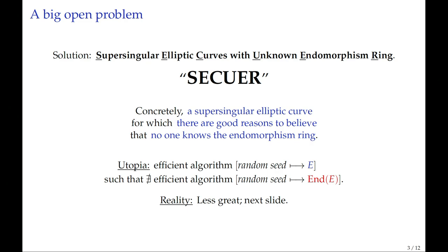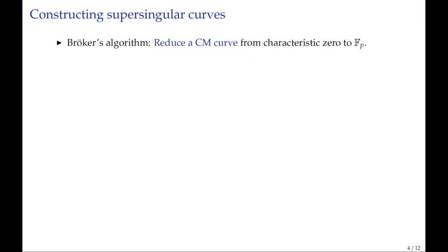In a perfect world, we would have an efficient algorithm that takes some randomness and outputs a supersingular elliptic curve, while there is no efficient algorithm that produces the endomorphism ring along with it. The reality of this is much less great than that. I'm going to very briefly survey the state of the art on constructing supersingular elliptic curves.